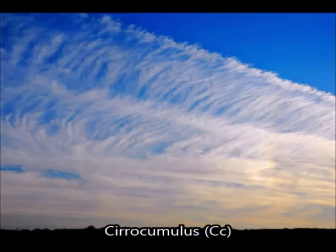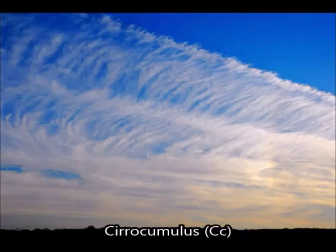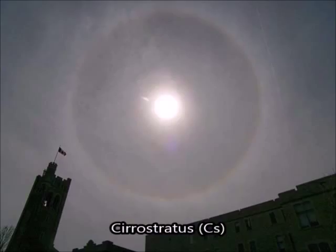Cirrocumulus have nil significant weather associated with them. Turbulence is usually nil to light in the cloud, and moderate when the cloud has a globular appearance. You do not need to worry about icing with this cloud, and visibility is usually about 1,000 meters in the cloud. They have zero effect on VFR flight and always have a base above 20,000 feet.